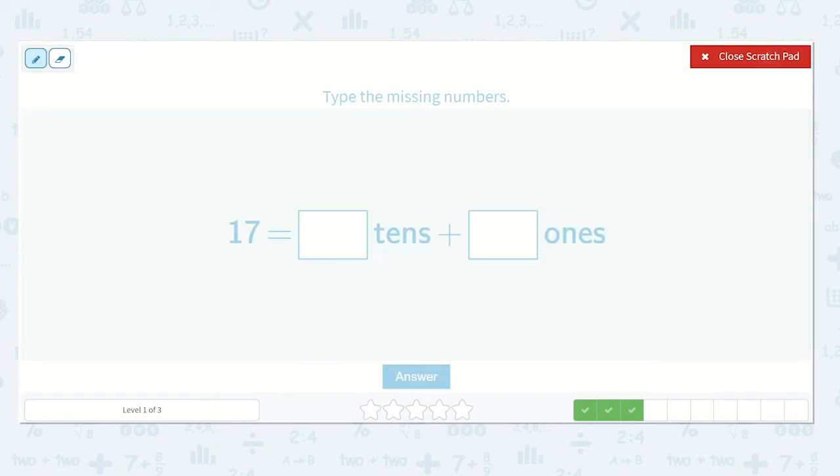Here's 17. What number is in the tens place? Yes, one. There's one ten, and what number is in the ones place? Seven. So seventeen is equal to one ten plus seven ones.